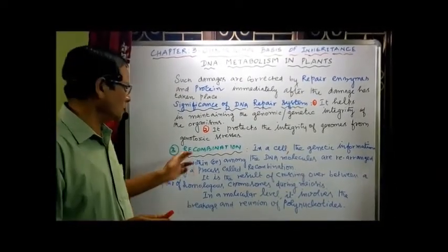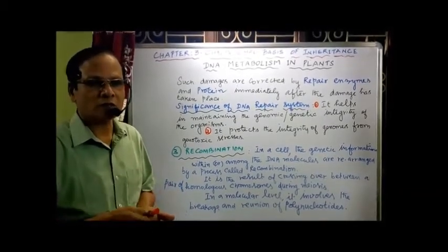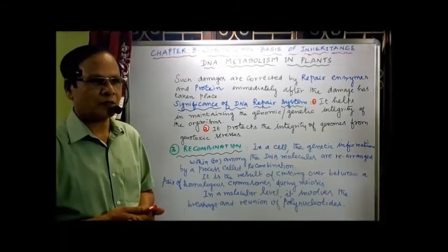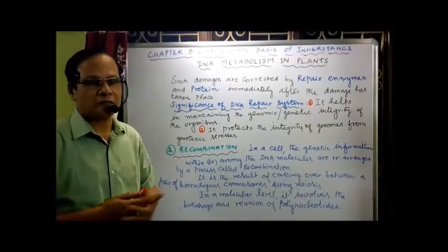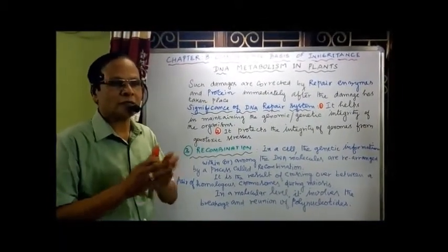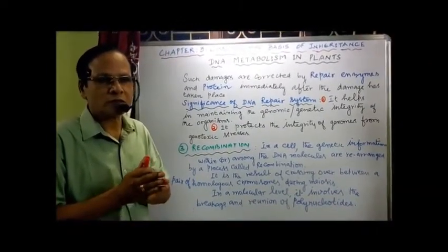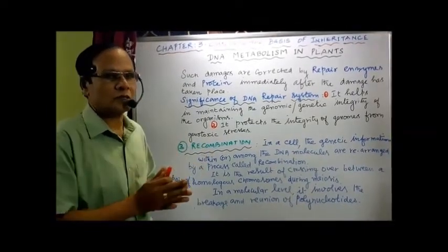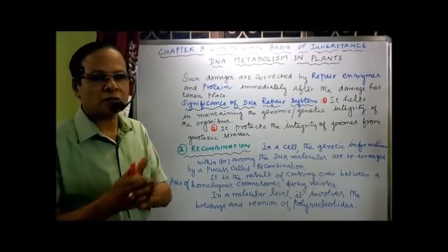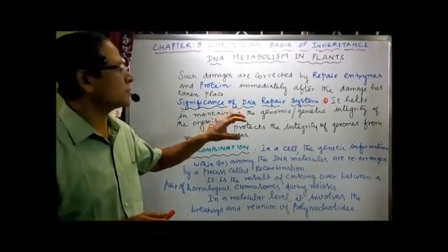The third event under DNA Metabolism is recombination. In a cell, the genetic information within or among the DNA molecules is rearranged by a process called recombination. This is a regular event taking place during meiosis. Recombination is brought about by a process called crossing over, between the two homologous pairs of chromosomes during meiosis. At a molecular level, recombination involves the breakage and reunion of polynucleotides.